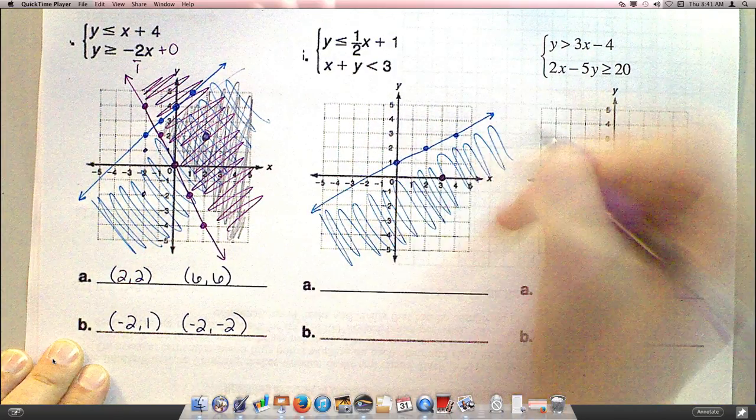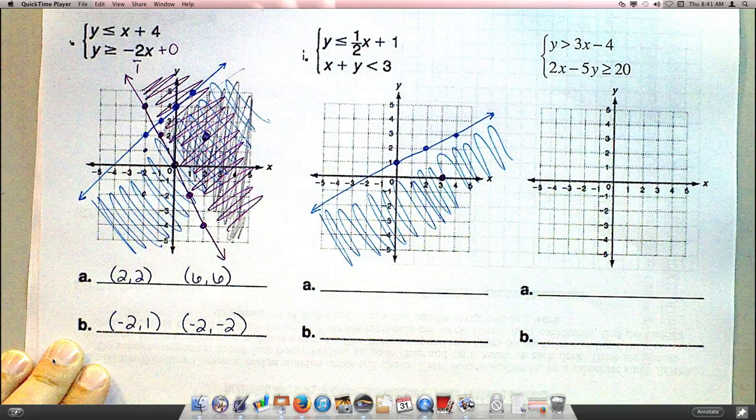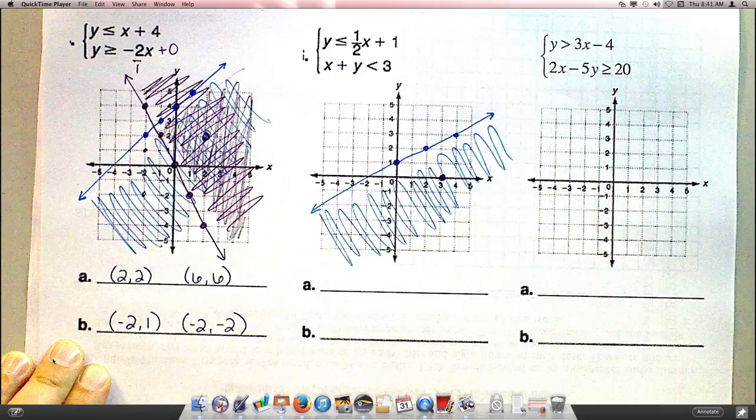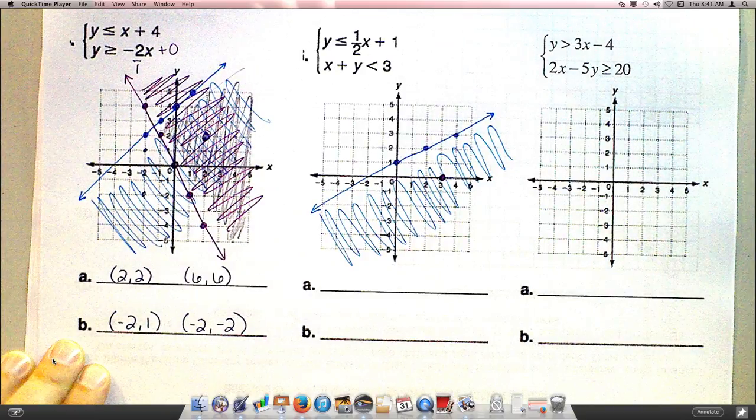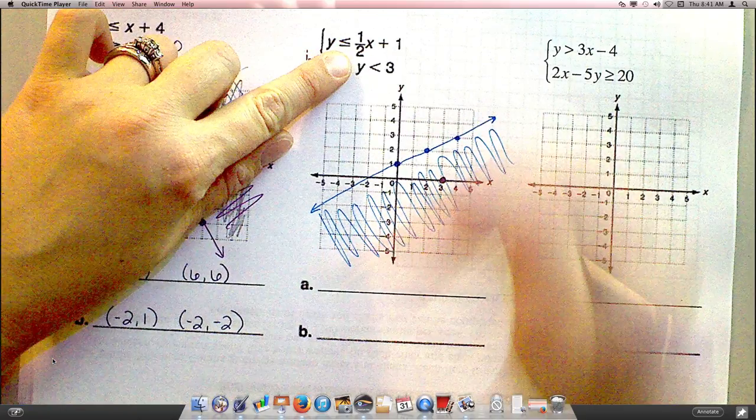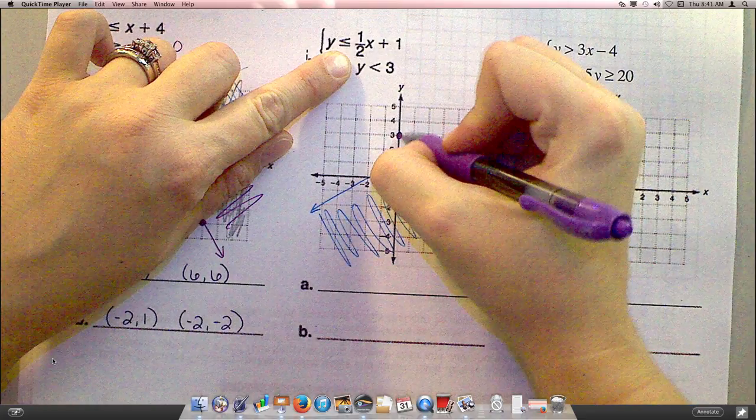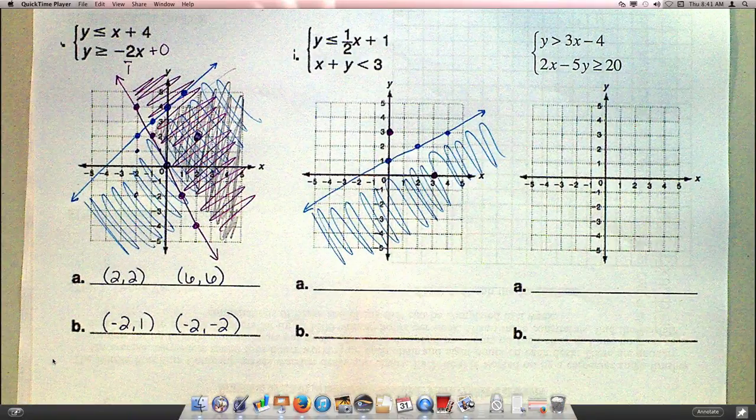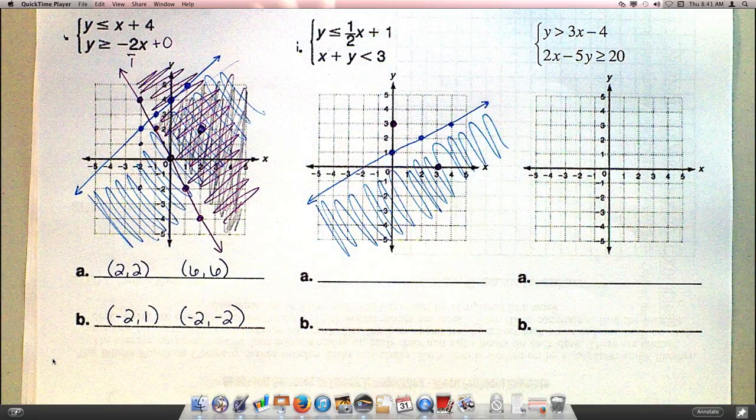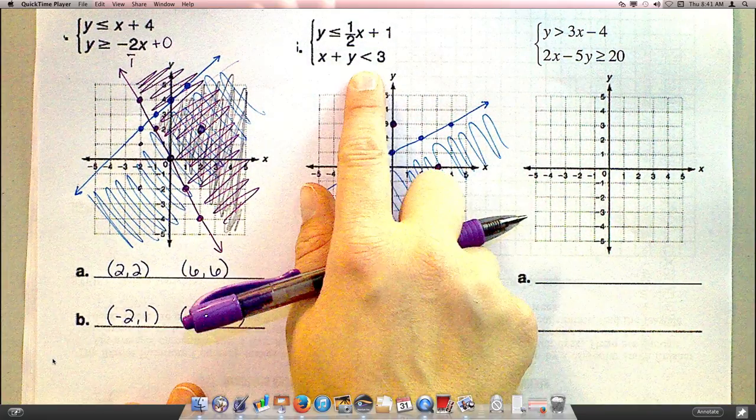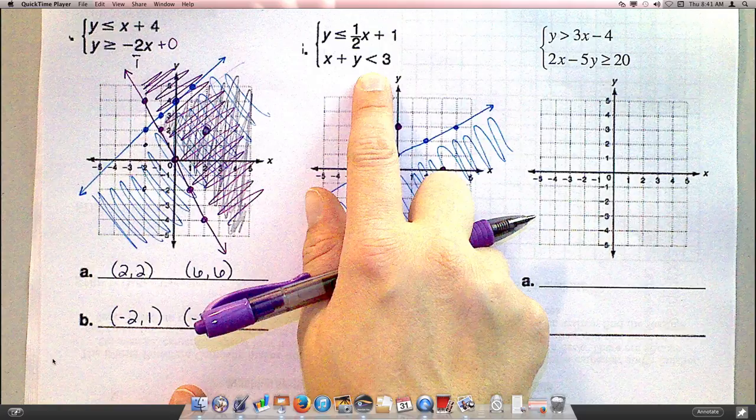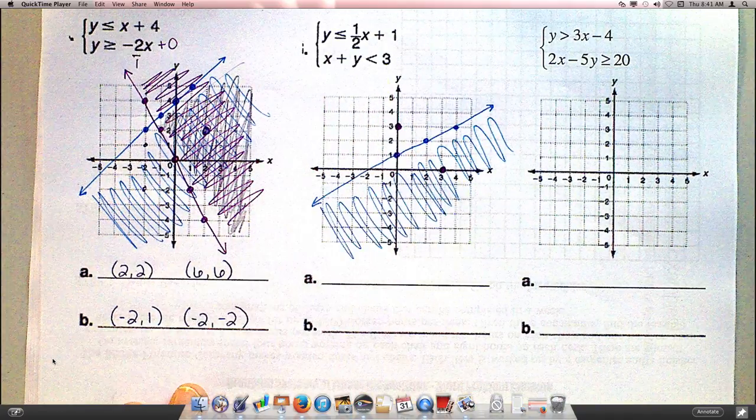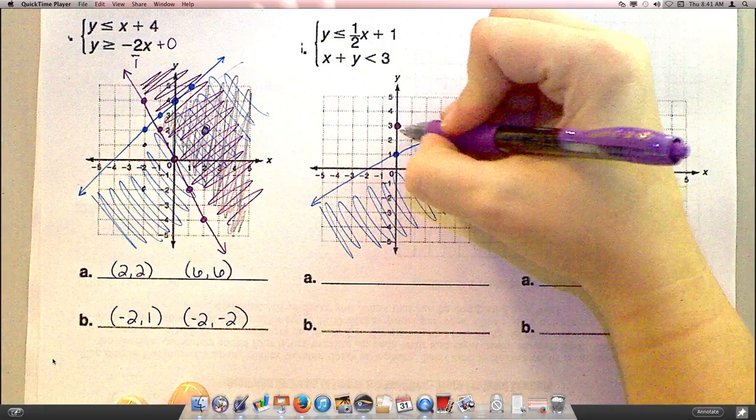What's my Y-intercept? If I put 0 in for X, 3. If I put 0 in for X, then Y would equal 3. So my Y-intercept is 3. And that means my line is going to connect those two points. And what kind of line will this one be? Dotted, because this inequality does not have an equal bar. And if it doesn't have an equal bar, we don't want to include the line in our solution. So dotted line through there.